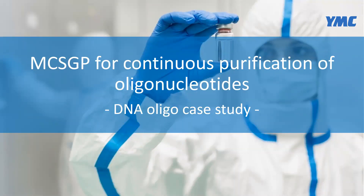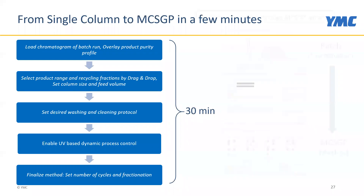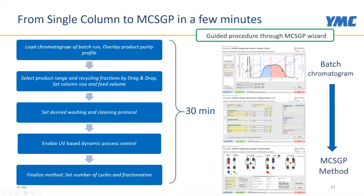Let's move to the purification of oligonucleotides as a first case study, showing how the MCSGP process is actually designed. We start from a single-column batch chromatography run on the lab-scale system, perform fraction analysis, and analyze the purity profile. Once we have this information, we enter it into the wizard — a software tool that comes with the operating software of the small-scale system. It helps design the MCSGP process in a few guided steps, typically taking no longer than half an hour, or as little as 15 minutes with practice.